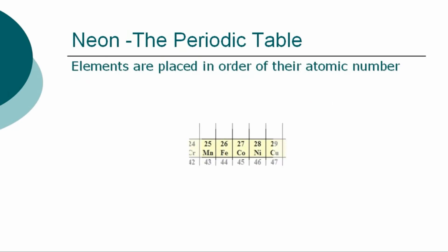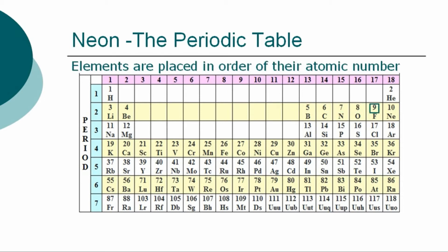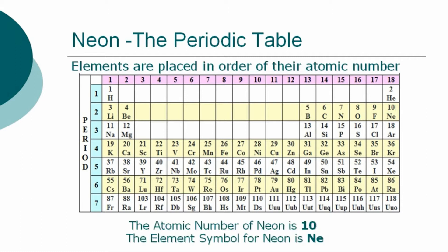The periodic table is a chart showing the symbols and the atomic numbers of all known elements, such as neon, in one large grid. The chemical elements of the periodic table are placed in order of their atomic numbers. Atomic numbers increase as you move across a row, called a group, or down a column, called a period. The atomic number of neon is 10.